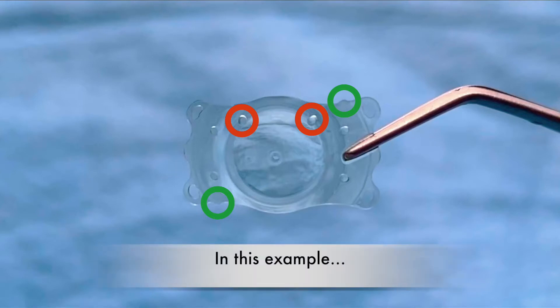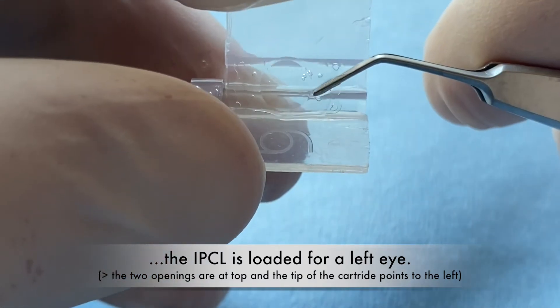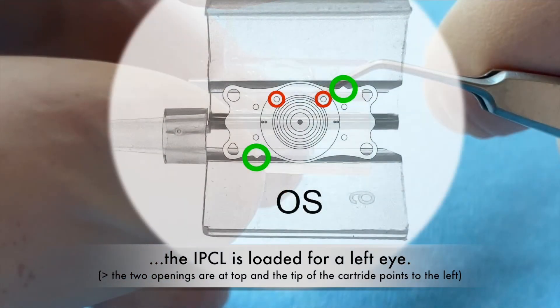In this example, the IPCL is loaded for a left eye. The two openings are at top and the tip of the cartridge points to the left.